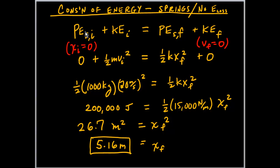Potential energy of the spring initial plus kinetic energy of the car initial, and that's the total energy before, is equal to the sum of those things after. Potential energy of the spring when it's maximally compressed, plus the kinetic energy of the car.